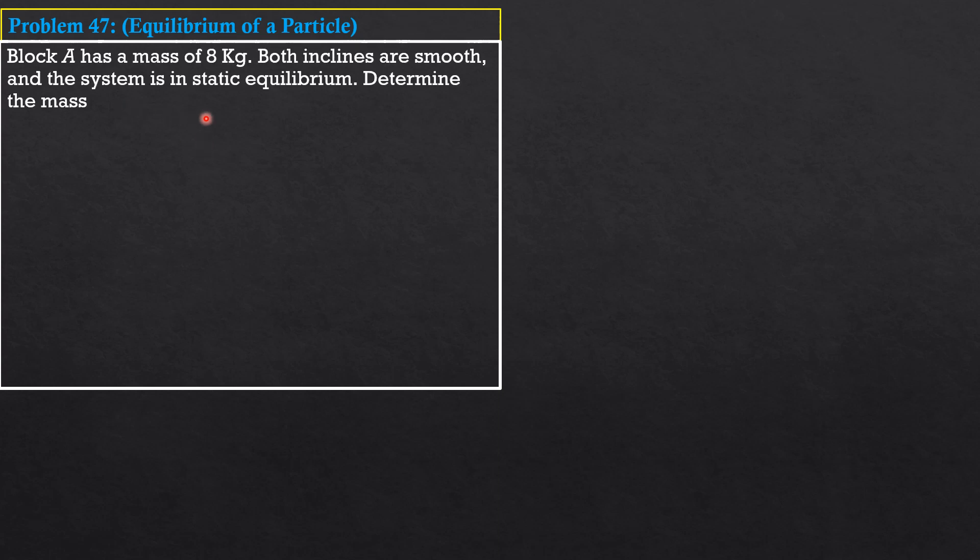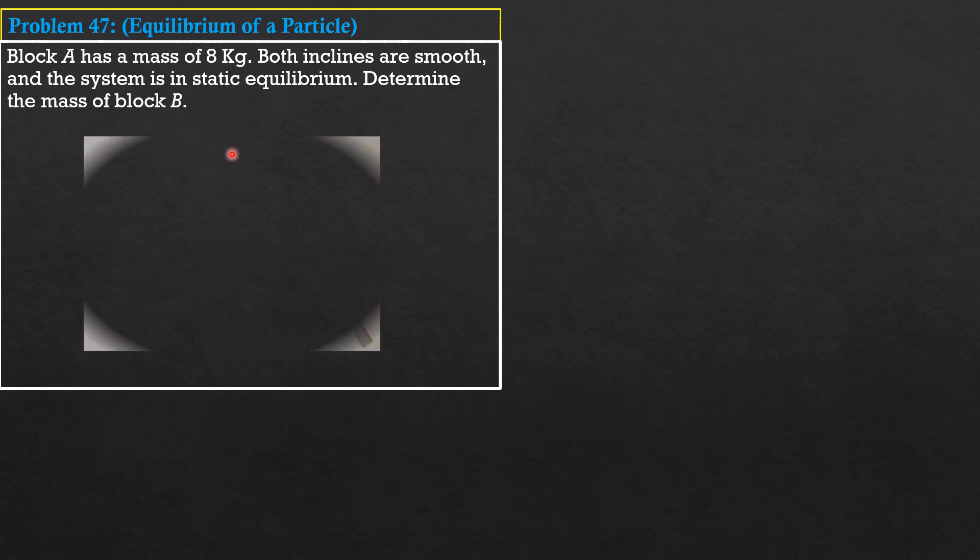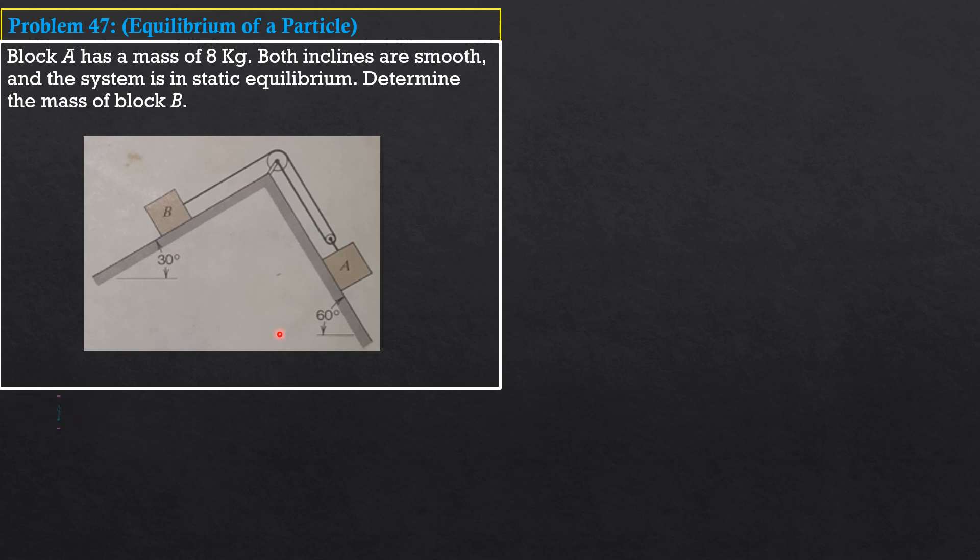Block A has a mass of 8 kilograms. Both inclines are smooth and the system is in static equilibrium. Determine the mass of block B. So, here is the given figure. For the solution, if we denote the tension to this cord as T, then this is T, this is T. Therefore, the tension in this chord is 2T.